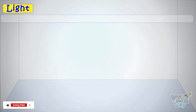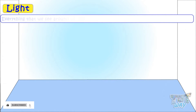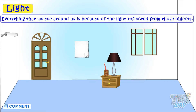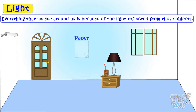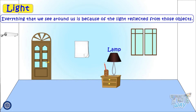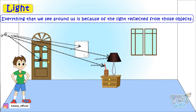First and foremost, we need to know that everything we see around us is because of light reflected from those objects. There may be many things around you — a pencil, a paper, a door, and a lamp. Everything is seen because of light reflected from it.